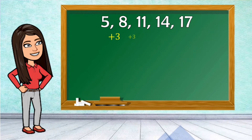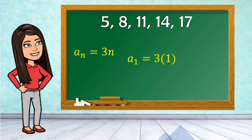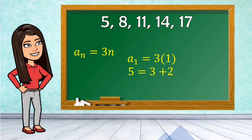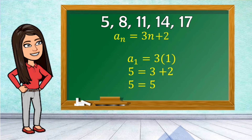The pattern here is adding by 3. So our a sub n has 3n. To get the general term, we use a sub 1, which is equal to 5. Following our formula 3n, 3 multiplied by 1 since n is equal to 1 gives us 3. But a sub 1 is 5, and 5 is not equal to 3. So what should be added to 3 to get 5? Meaning, a sub n is equal to 3n plus 2.